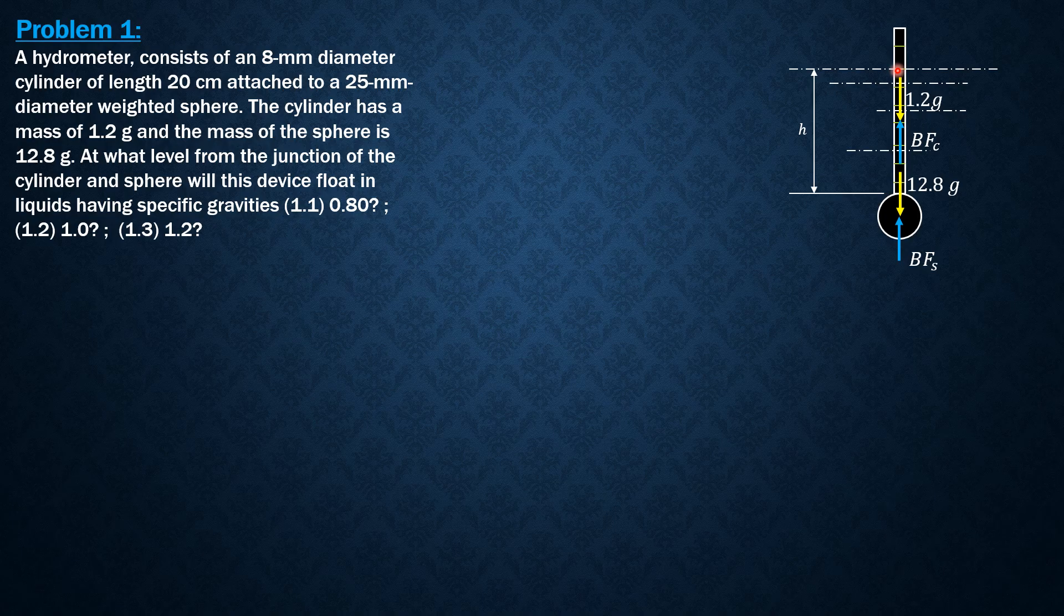So it will automatically or directly read the specific gravity by the intersection between the liquid surface and the markings, graduations for specific gravities on this stem. So the stem is 8 mm in diameter or 0.4 cm in radius and the sphere has a radius also of 12.5 mm or 1.25 cm. Since the given mass of the stem and the sphere, we express buoyant force as buoyant mass also in grams.